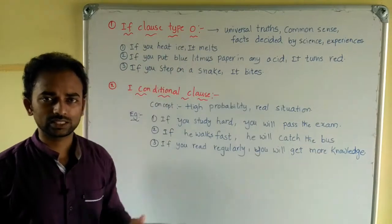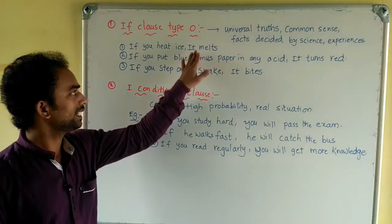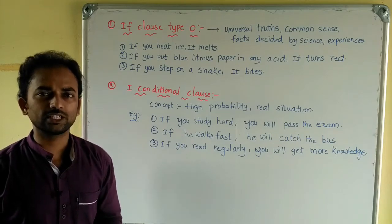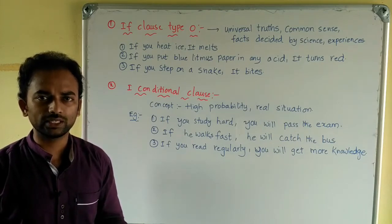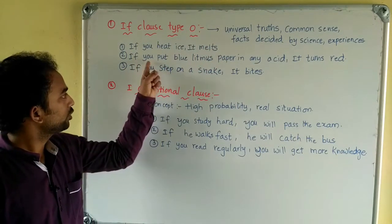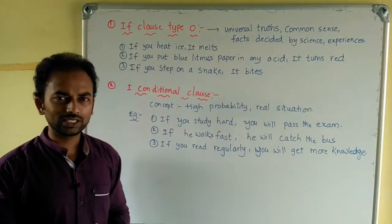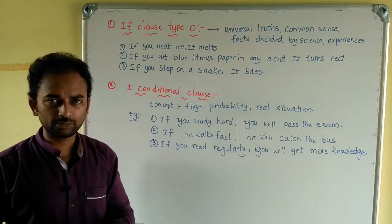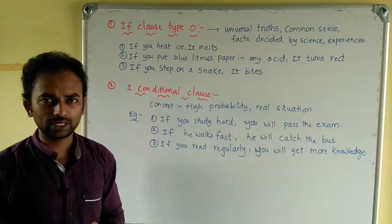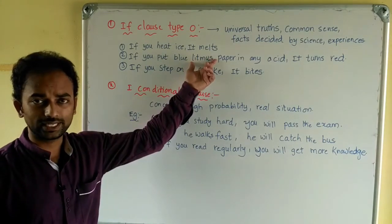For example: if you heat ice, it melts — it automatically melts. That is a fact. Another example: if you put blue litmus paper in any acid, it turns red. This is a fact decided by science — the litmus paper automatically turns red when placed in acid.